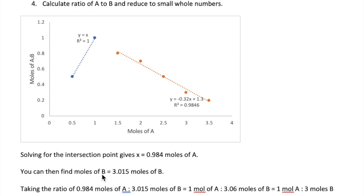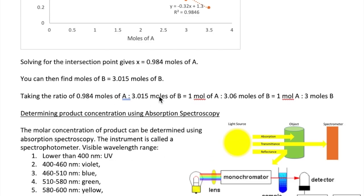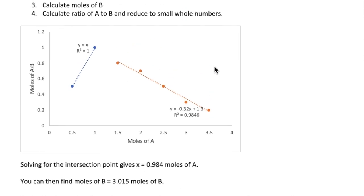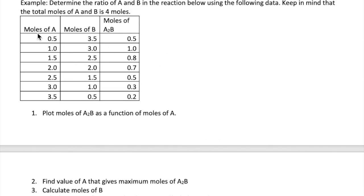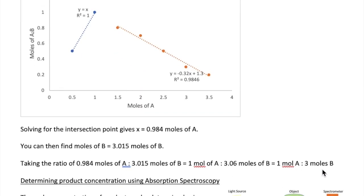Which then means we can find the number of moles of B by subtracting that number from 4 moles, which is the total, to give us 3.015 moles of B. Then the last step is to convert the ratio of A and B to a whole number, and that ends up giving us 1 mole of A to 3.06 moles of B, which rounds to 3. So then in this particular data set, the stoichiometric ratio between A and B is 1 of A to 3 of B.